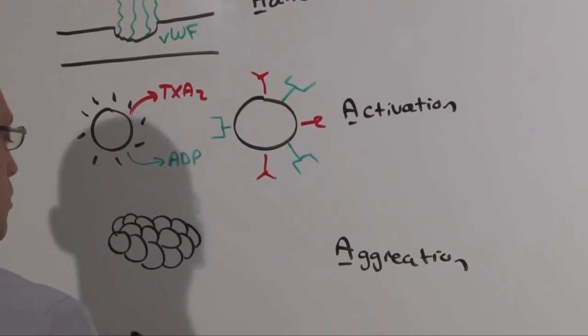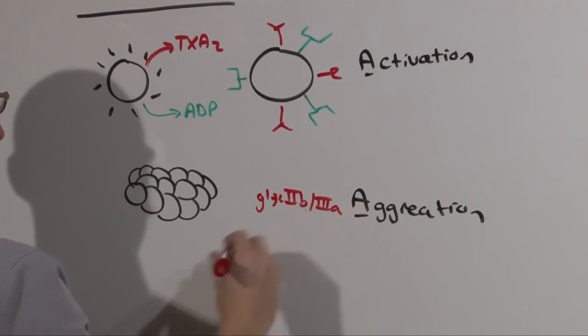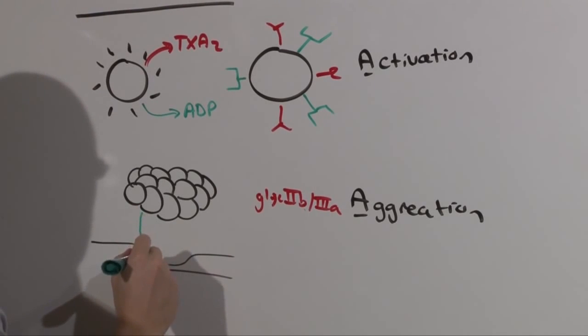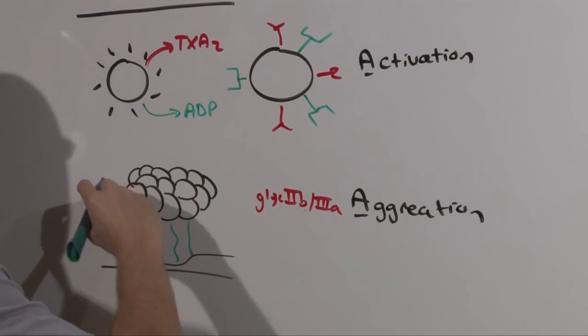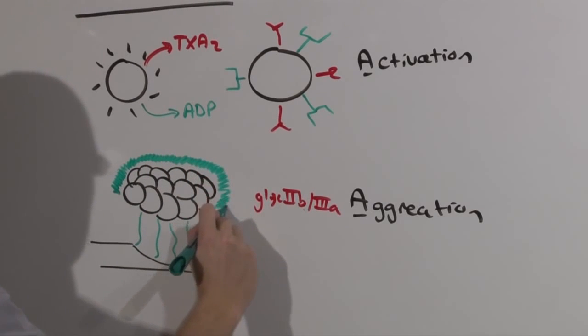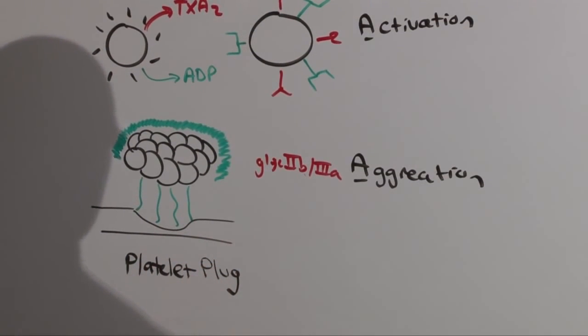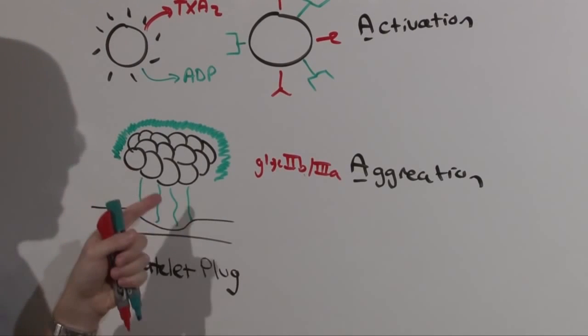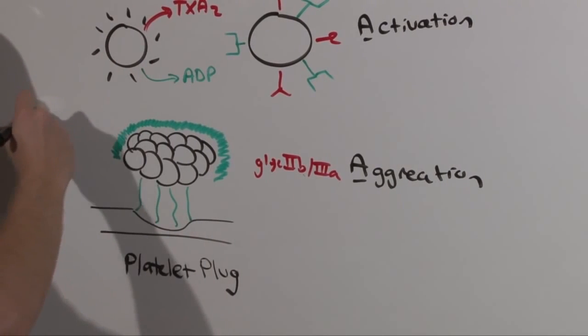Aggregation is mediated by glycoprotein 2b3a. The end product is endothelial injury connected to these platelets by von Willebrand factor, who are connected to each other by glycoprotein 2b3a and connected via fibrinogen. The final product, the platelet plug, consists of activated platelets stuck to each other by glycoprotein 2b3a and fibrinogen, and stuck to the site of endothelial injury by von Willebrand factor and glycoprotein 1b.